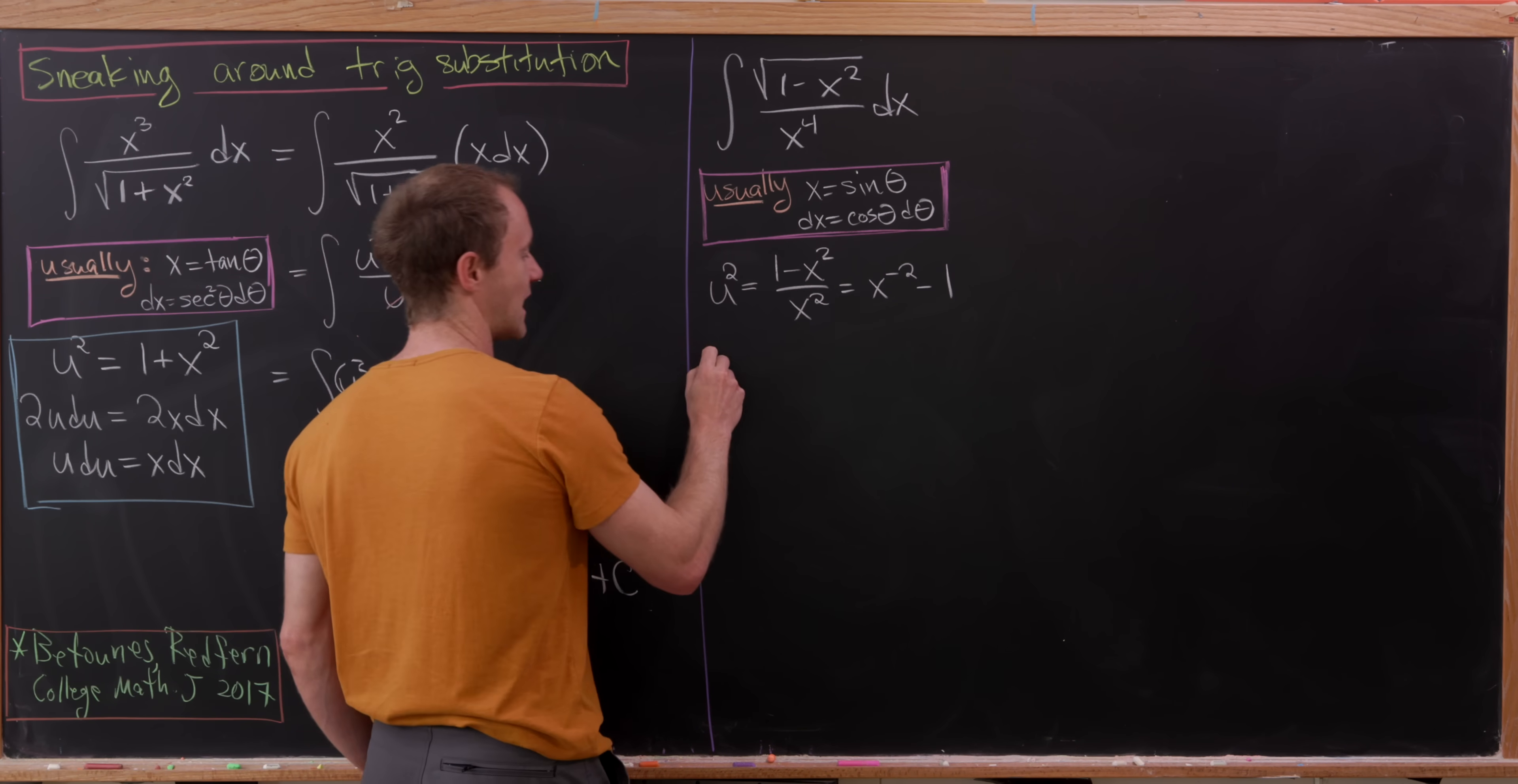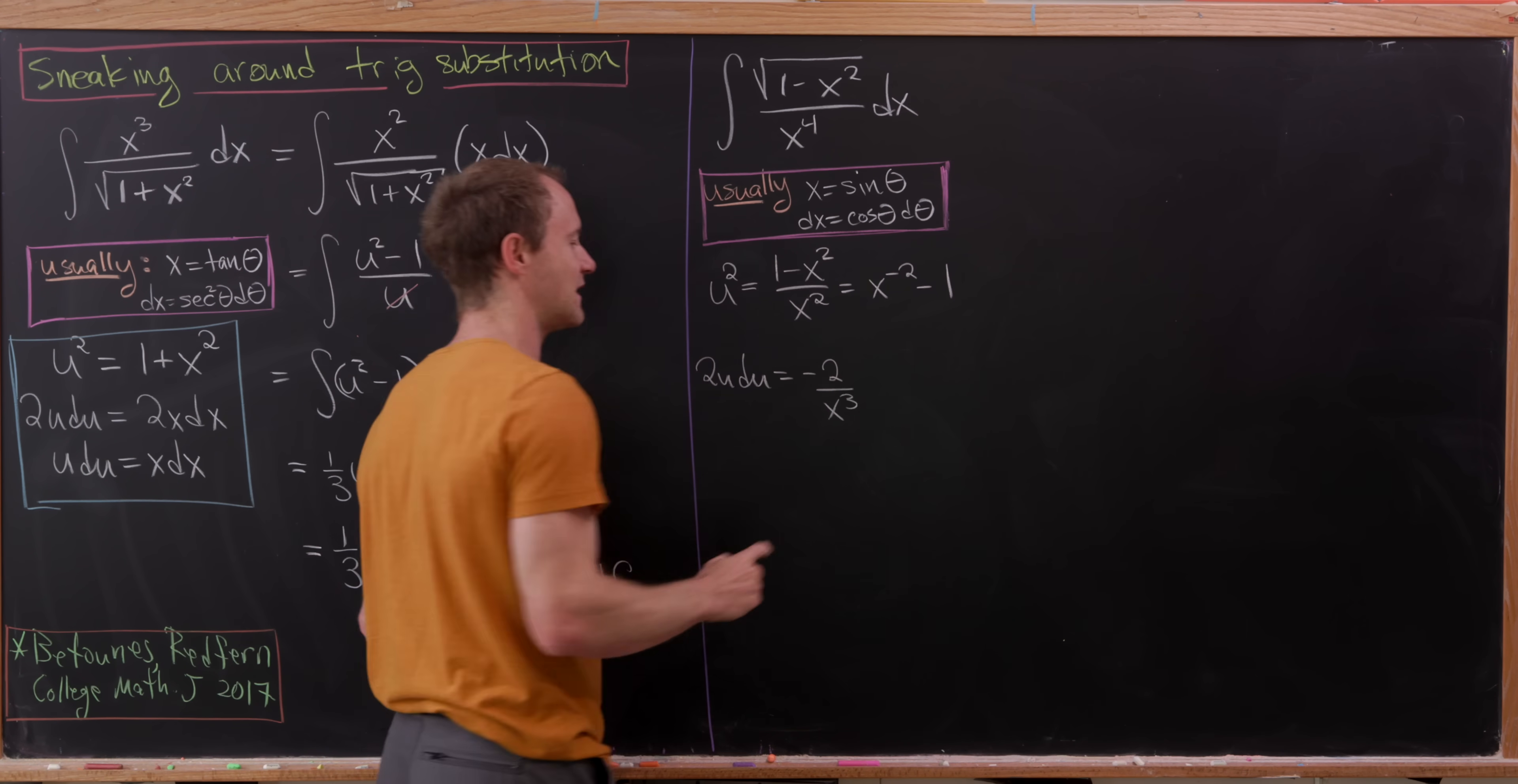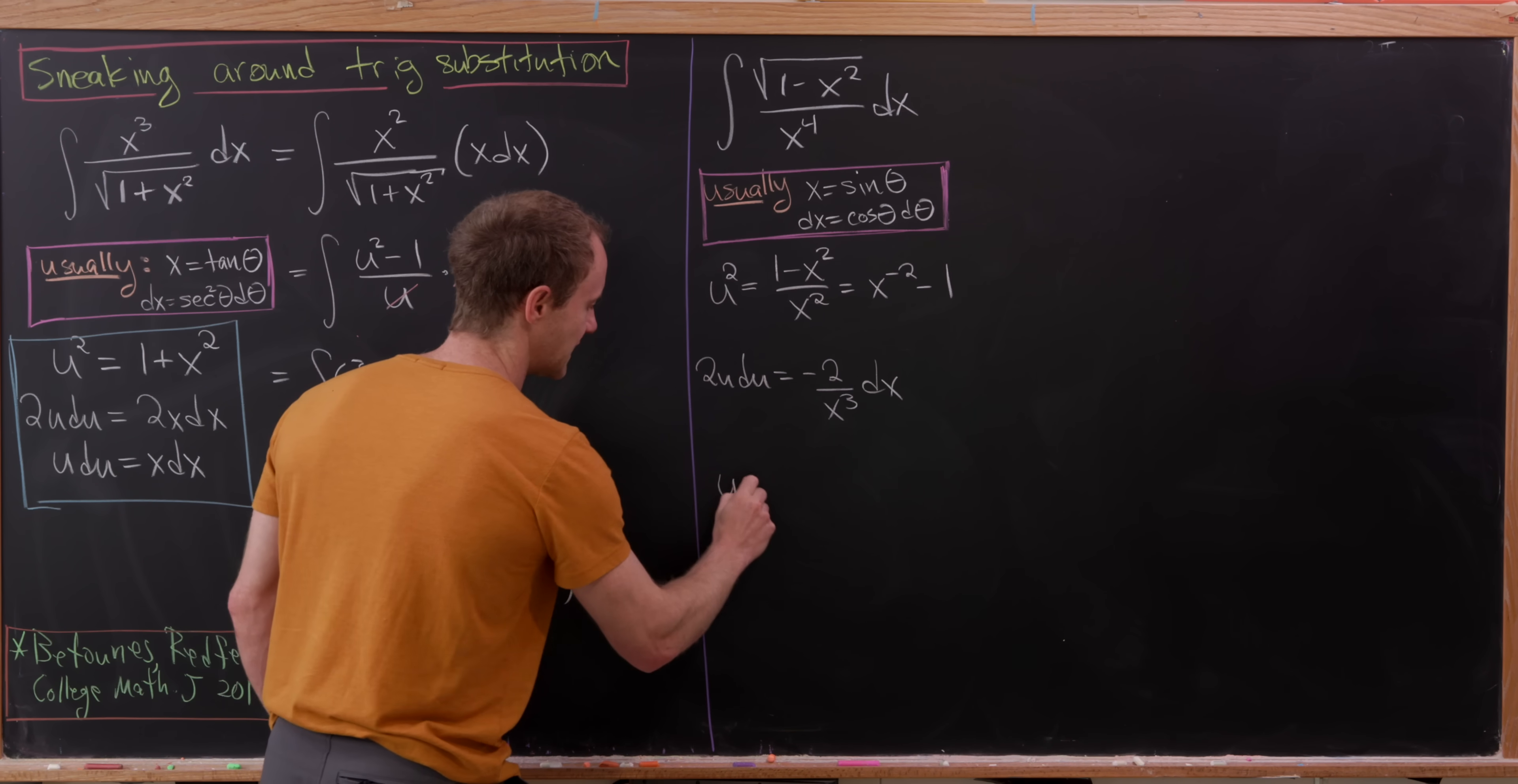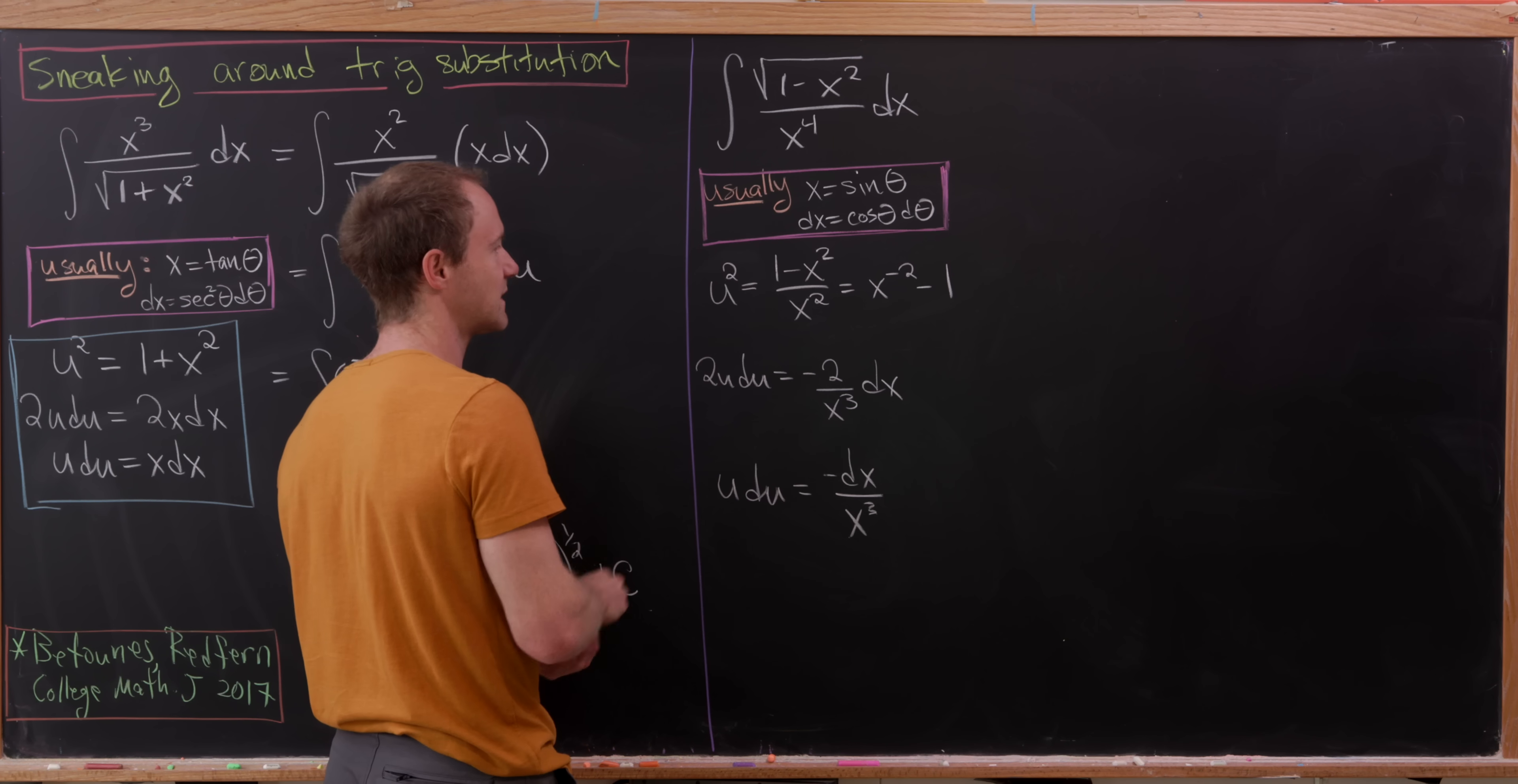Okay, so differentiating, we'll have 2u du is minus 2 over x cubed, keeping in mind that what we're really getting there is minus 2 times x to the minus 3, but I'll just bring that down, and then dx. But then here we can get u du is equal to maybe minus dx over x cubed. So something like that.